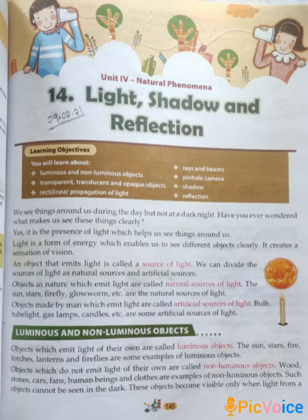Objects in nature which emit light are called natural sources of light. For example, sun, stars, firefly, glowworm, etc. And the objects made by humans which emit light are called artificial sources of light. For example, bulb, tube light, gas lamps, candles, etc.